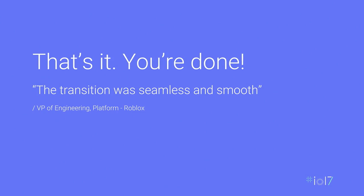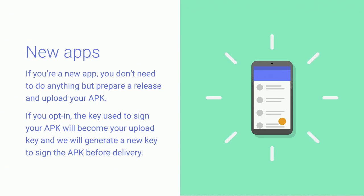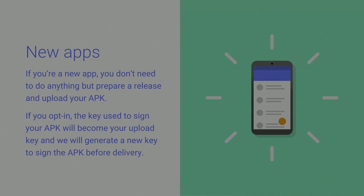And that's it — you're done. Hopefully the transition is seamless and smooth, just like it was for Roblox. For new apps, it's even simpler. We'll create and use a new app signing key to sign your app before it's deployed to users. The key that you use to sign your APK before uploading to Play Console becomes your upload key. Now Anthony is going to talk about the security aspects of this product.